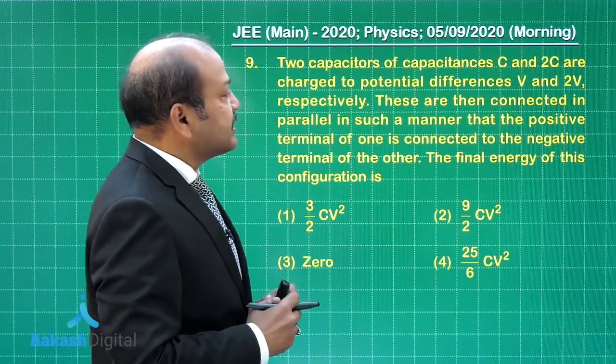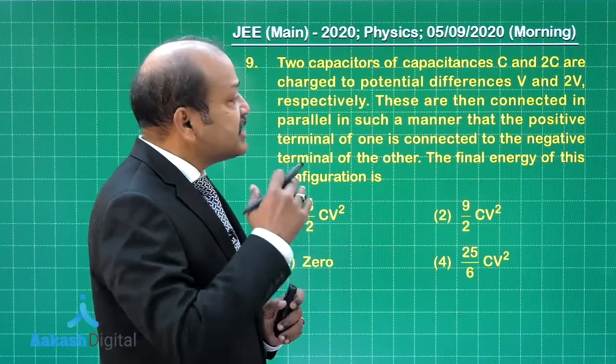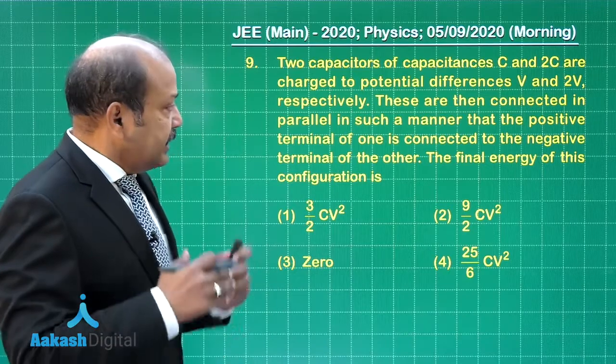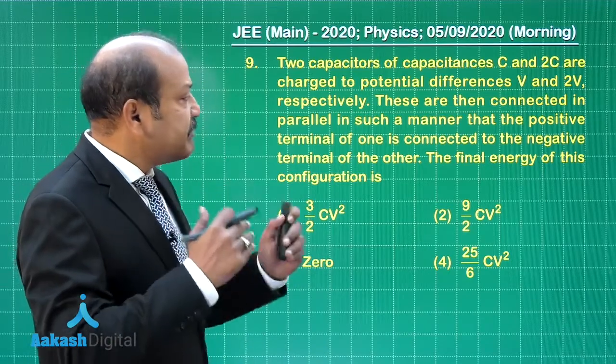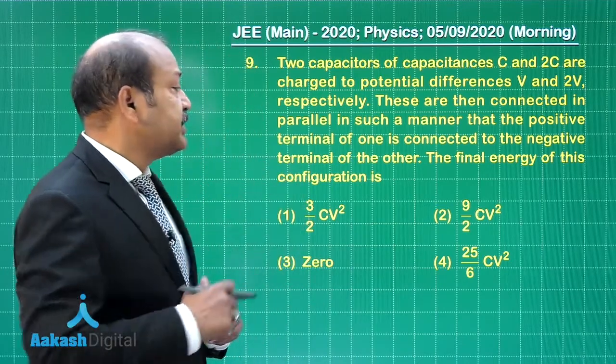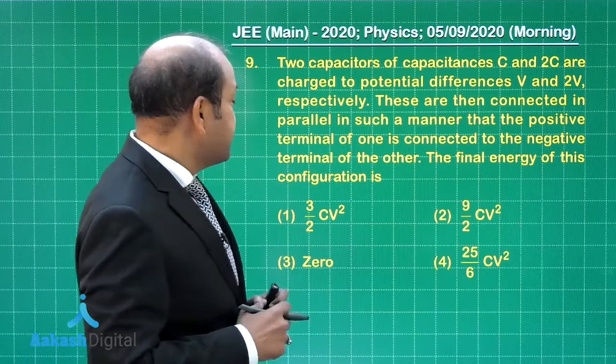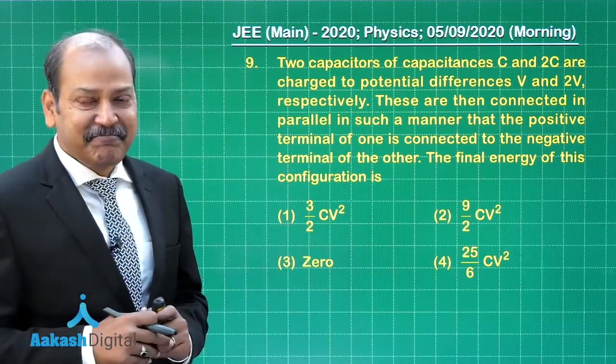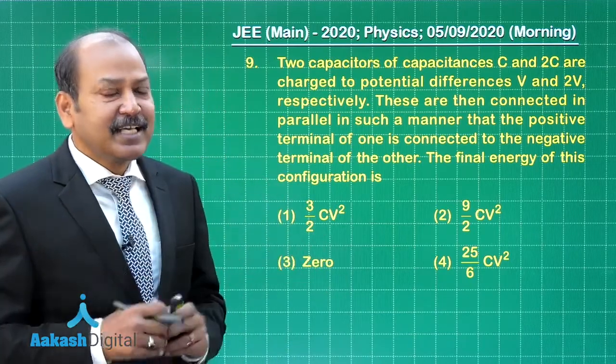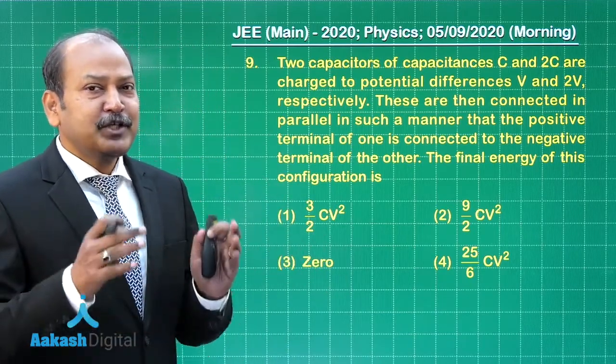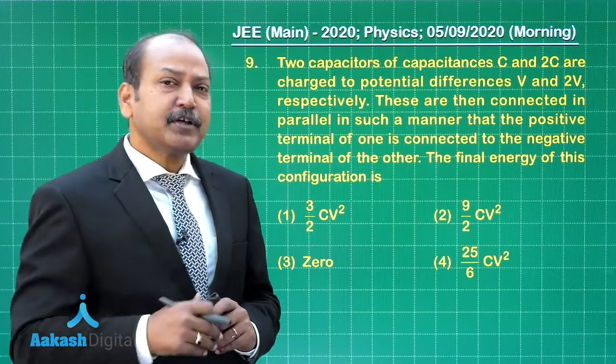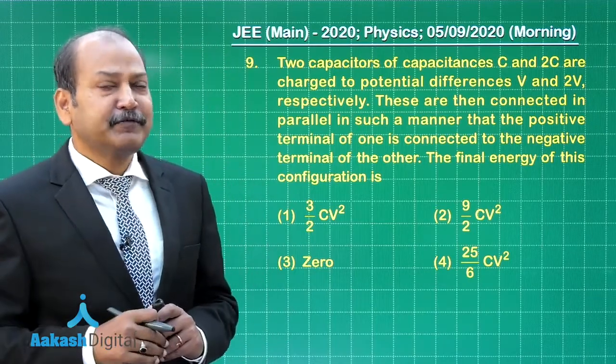Question 9 says two capacitors of capacitances C and 2C are charged to potential differences V and 2V respectively. These are then connected in parallel in such a manner that the positive terminal of one is connected to the negative terminal of the other. The final energy of this configuration is. Well clearly the question is from electrostatics and it is about sharing of charges and common potential when two charge capacitors are connected. The important point here is that the positive plate of one is connected to the negative plate of the other.